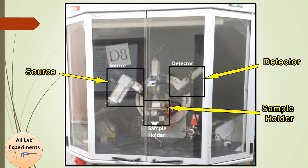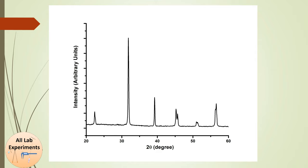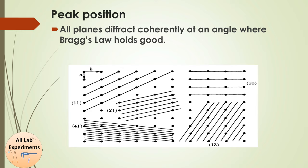In this system the sample remains stationary and both the source and detector move. Now we are going to analyze the position, intensity, and width of peaks. This is a typical XRD pattern in which the x-axis shows the variation of 2θ angle and the y-axis shows intensity. At some particular positions there are peaks whose intensities differ from one another. Also, these peaks are not absolutely sharp — they have some width. Let us start with peak position, taking an example of a two-dimensional grid of atoms.